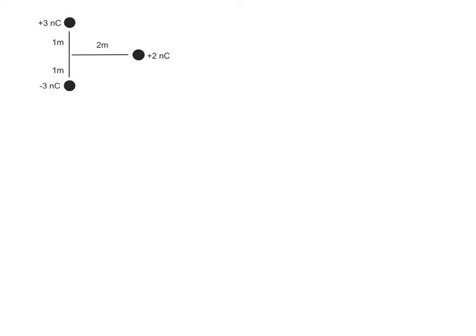We are going to do a simple example of some vector addition. This example is not anywhere in your notes packet. I was going to do micro coulombs, but there's no symbol for micro, so it's going to be nano coulombs for everything. The charges here — we're going to be figuring out the net force that they are exerting on the two nano coulomb charge.